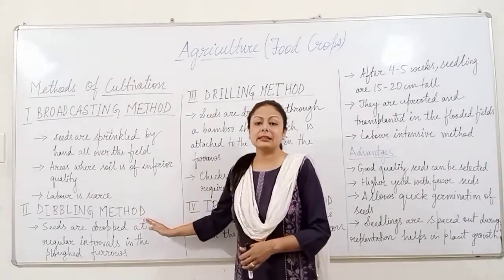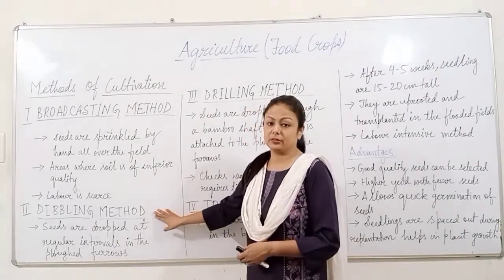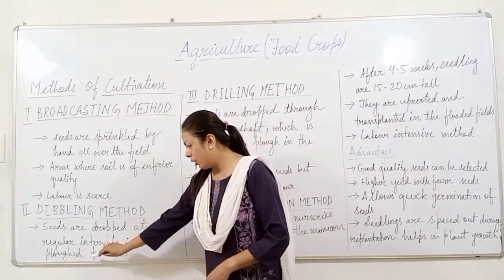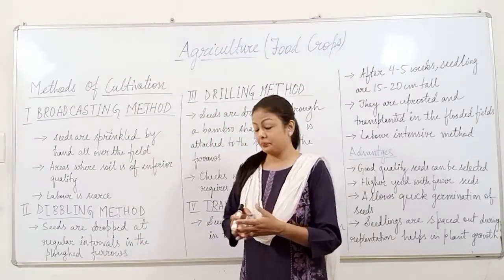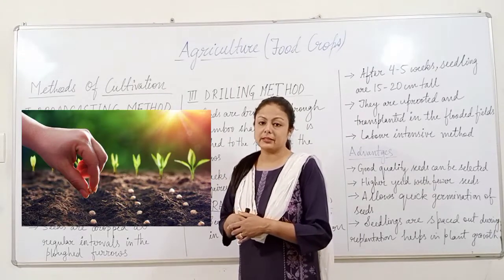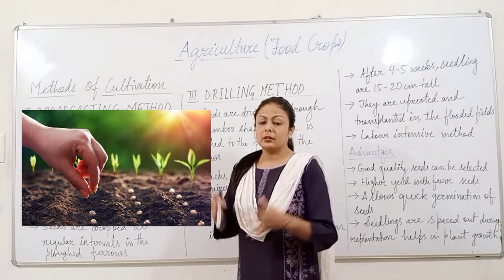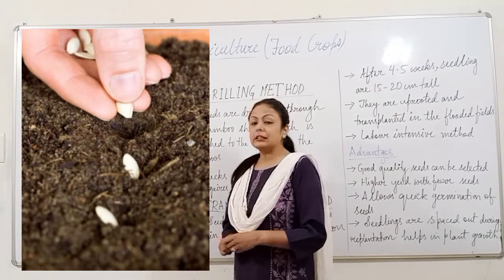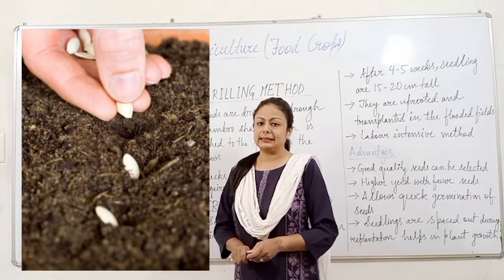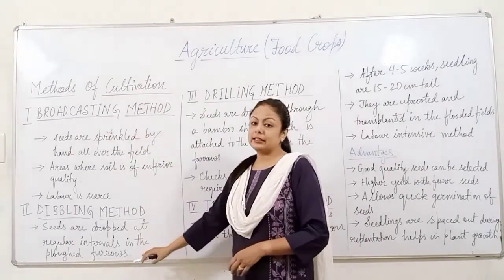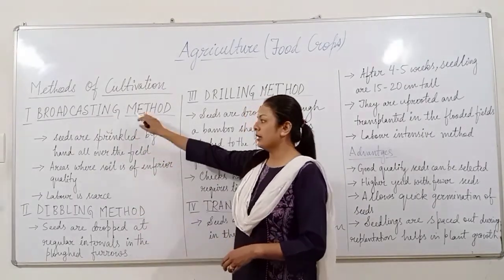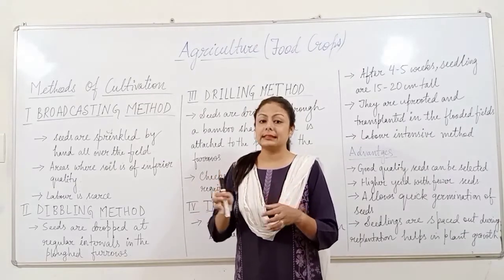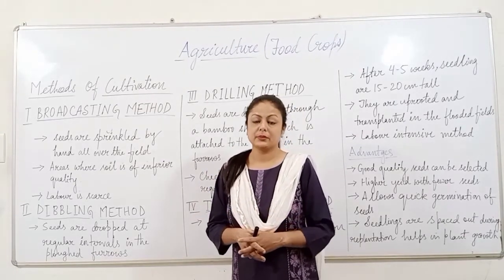The next method is the dibbling method. In this method, seeds are dropped at regular intervals into ploughed furrows. The field is ploughed, furrows are made, and then the seeds are dropped into the furrows. The difference between broadcasting and dibbling is that in broadcasting seeds are simply scattered, whereas in dibbling, furrows are made first and seeds are dropped into them.